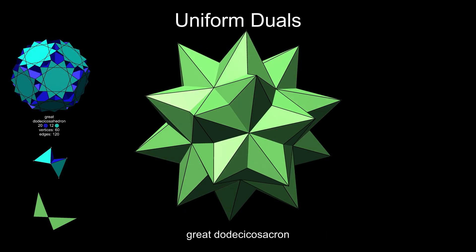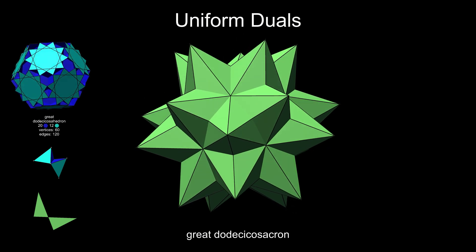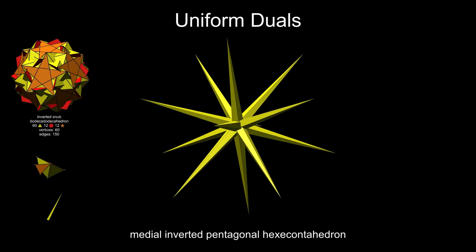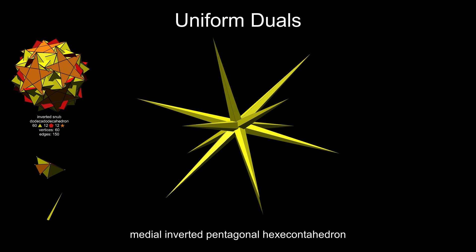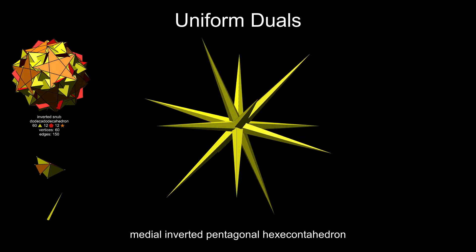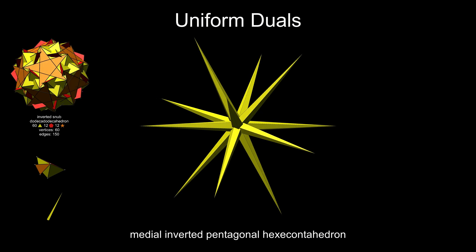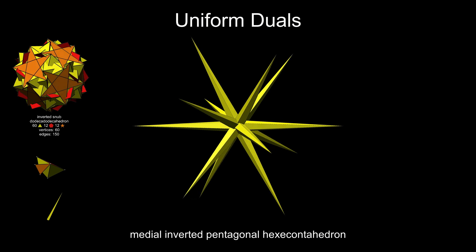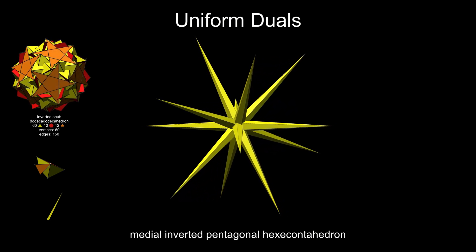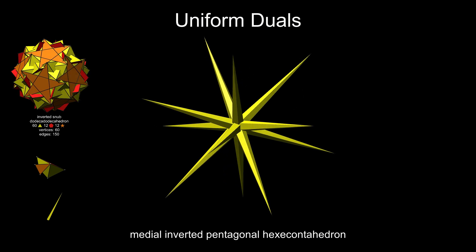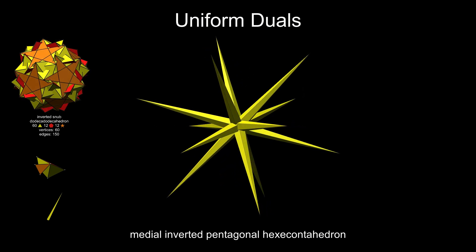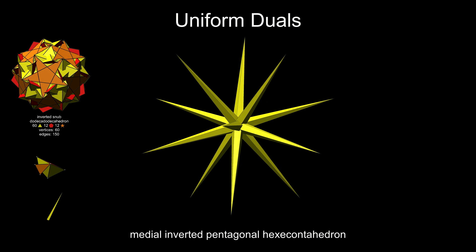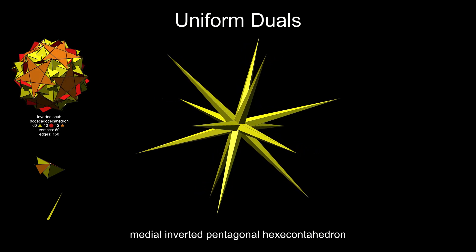The great dodecacosahedron has faces that are crossed quadrilaterals, or bow-tie shapes. The inverted snub dodecadodecahedron has faces passing very close to the centre, so its dual, the medial inverted pentagonal hexacontahedron, has some vertices very far from the centre, resulting in an exceptionally spiky polyhedron. The dual faces are long thin pentagons, with an acute angle under 4 degrees and longest sides 70 times as long as the shortest sides. Only the 12 sharp vertices are visible within the dual; 72 other vertices are hidden inside.